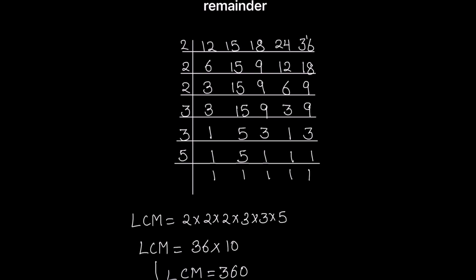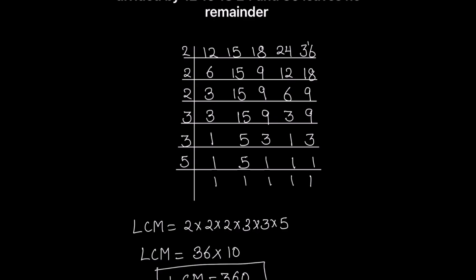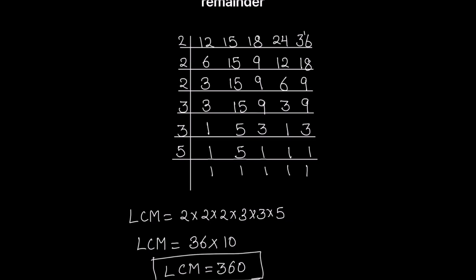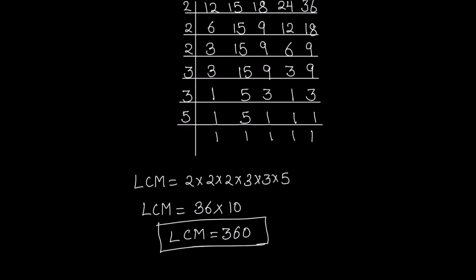So the least number, or the smallest number, which when divided by all these numbers leaves no remainder will be 360. This is how, by using the least common multiple, we find the smallest number which when divided by all these numbers leaves no remainder. I hope this video is helpful. If you like the video, please hit the like button and subscribe to my channel for more math videos. Thanks for watching.